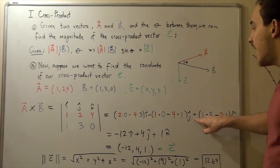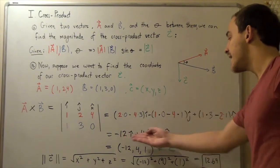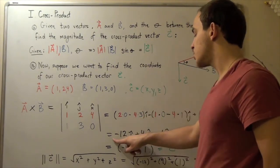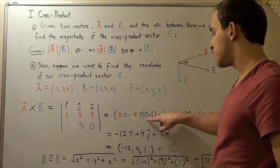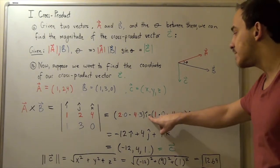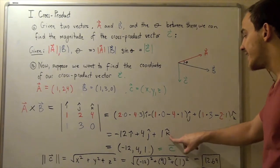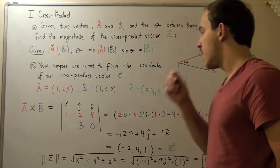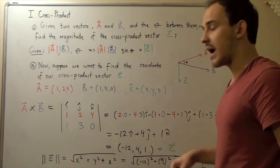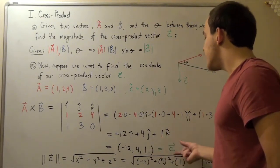Notice there is a plus for the x-term and a minus for the y-term — don't forget this minus, it's important; forgetting it makes your answer incorrect. Now solving: 2 times 0 minus 4 times 3 gives minus 12, so the x-coordinate is minus 12 times i-hat. Then 1 times 0 minus 4 times 1 gives minus 4, times negative one gives plus 4 j-hat. And 1 times 3 minus 2 times 1 gives plus 1 k-hat. So our vector is (minus 12, 4, 1).